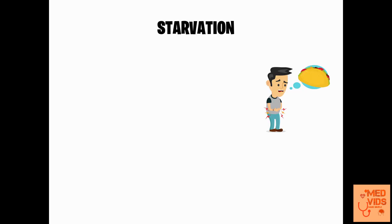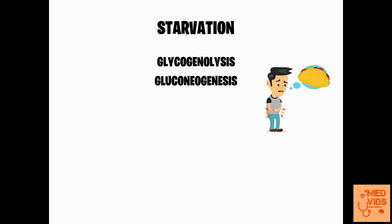In starvation, the first step is glycogenolysis — breakdown of glycogen stored in the liver to supply glucose for the body. This can sustain the body for about 18 hours. Simultaneously, gluconeogenesis takes place — for example, alanine from skeletal muscle is sent to the liver and used to form new glucose.